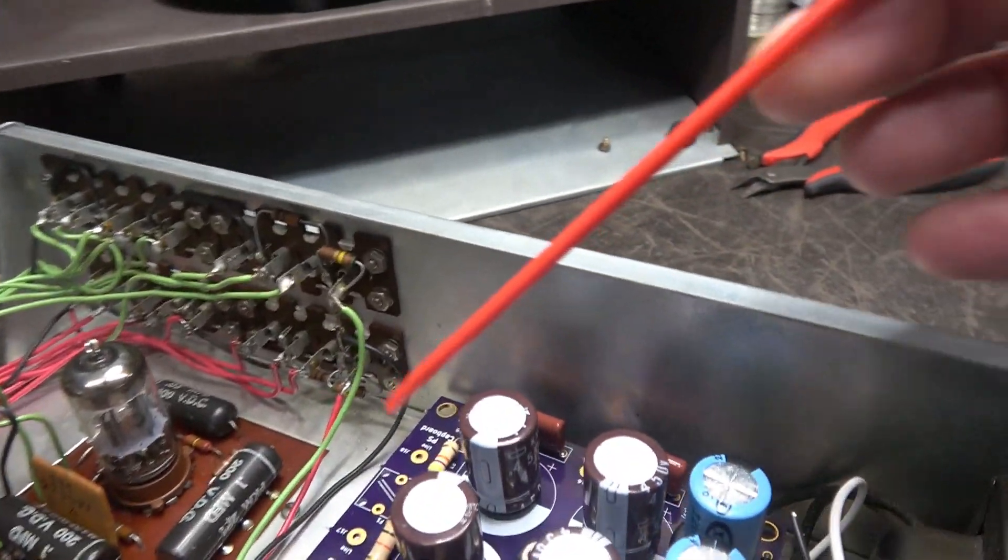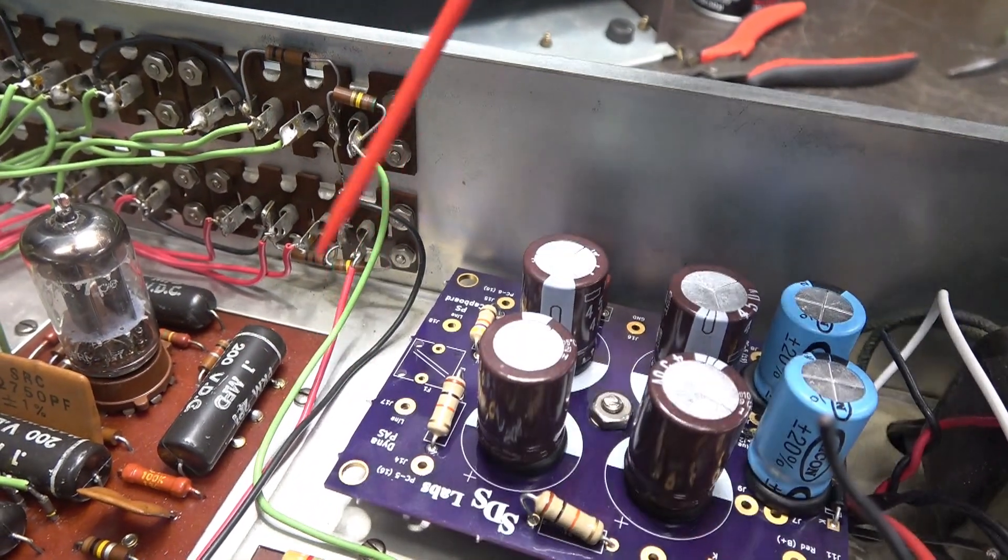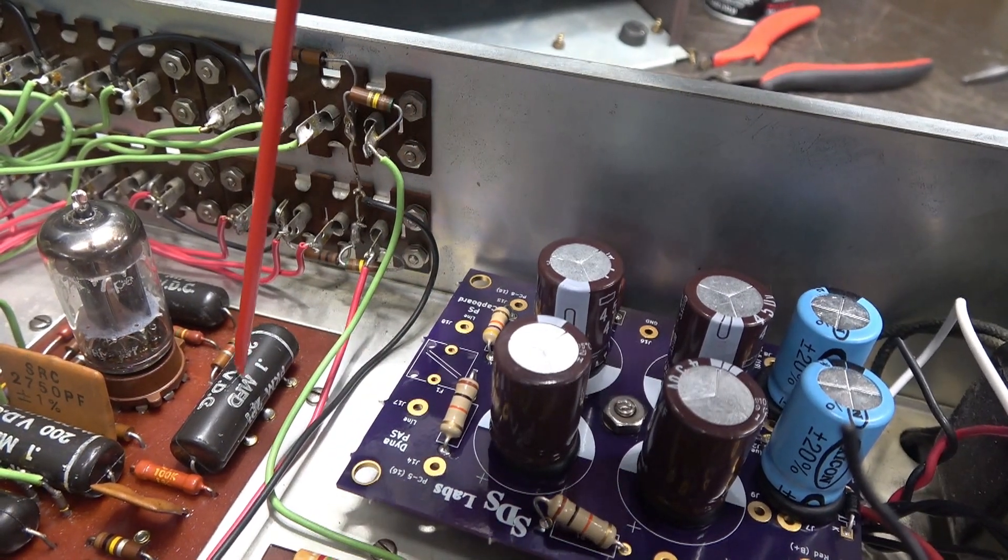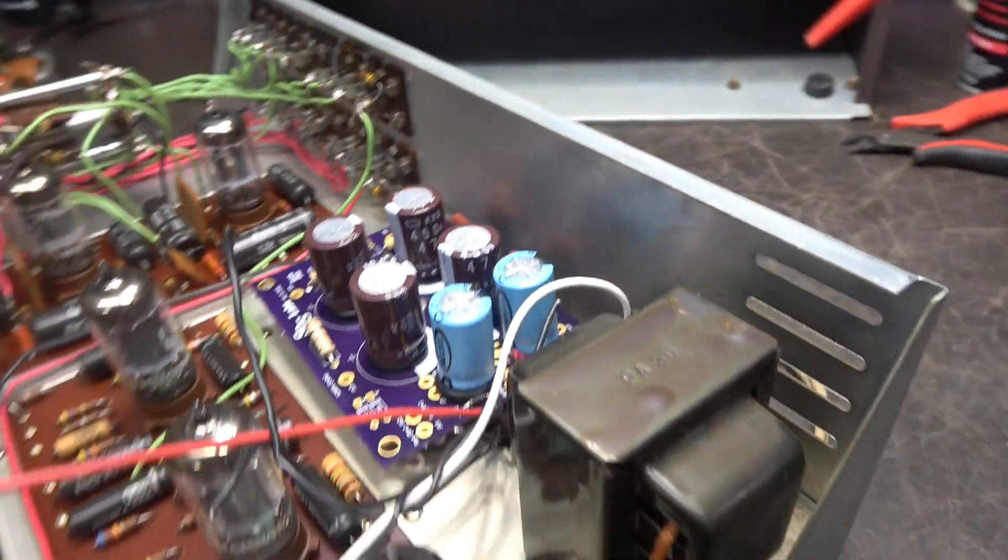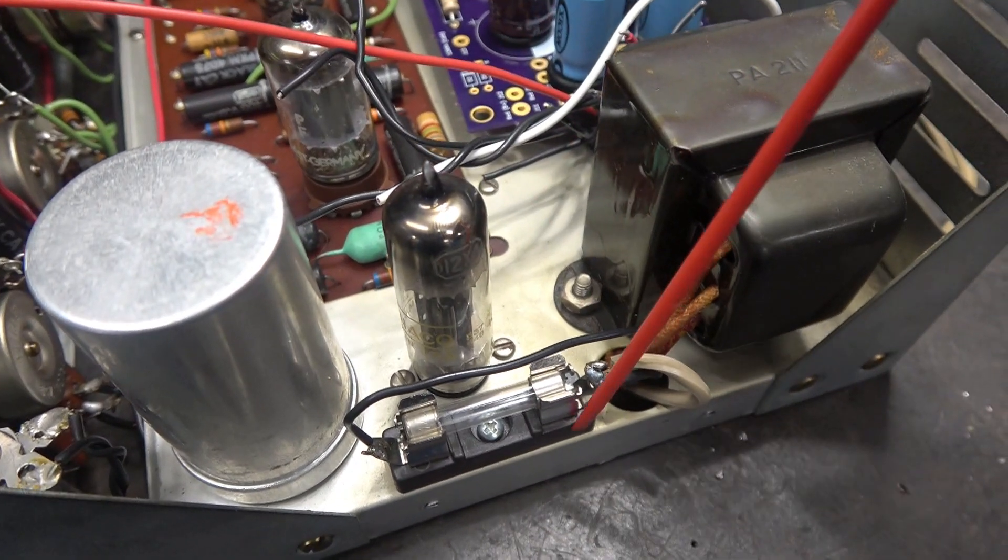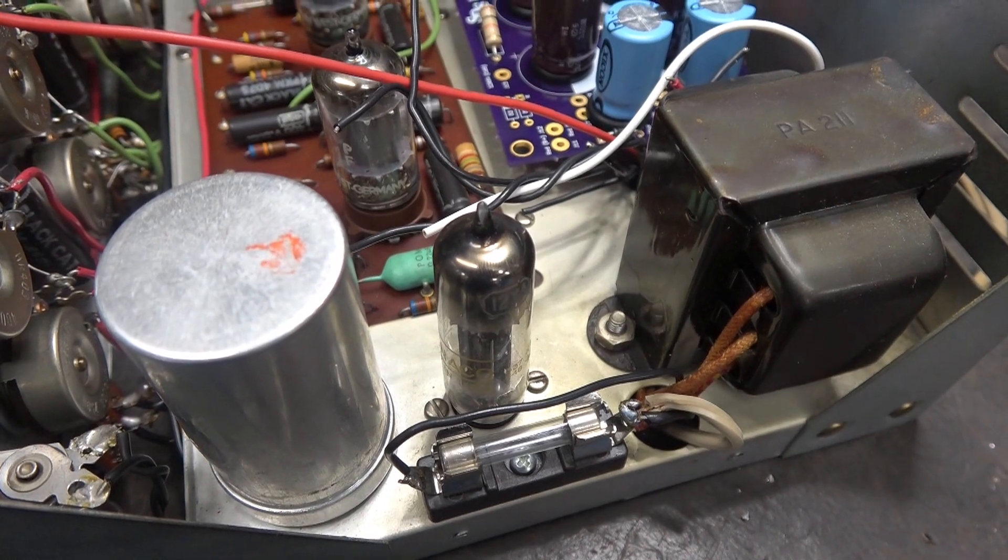Some people actually install the line fuse here between these two boards. I believe that's a bad idea because now your AC is pretty close to your preamp board and it could pick that up, so I prefer to locate it over here. You can tuck it between the rectifier tube and the chassis so the sidewall of the cabinet comes up here, clears it just fine.